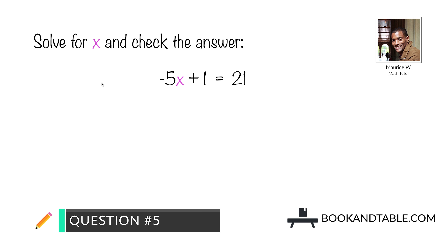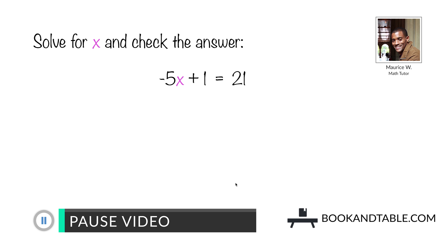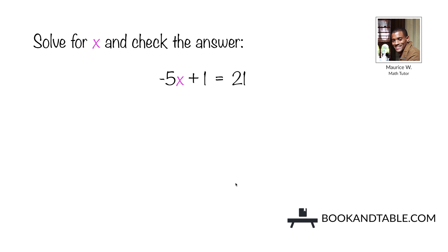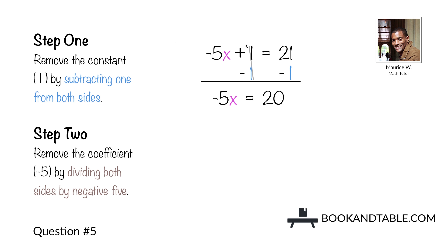Question number five: solve for x and check the answer. Negative 5x plus 1 is equal to 21. Step one: first remove the constant on the same side as x. Remove the constant positive 1 by subtracting 1 from both sides. This leaves you with negative 5x on the left side of the equal sign, and on the right side we have 21 minus 1, which leaves us with 20.